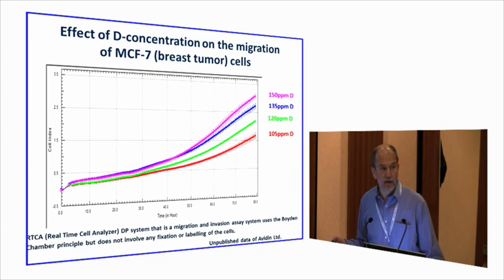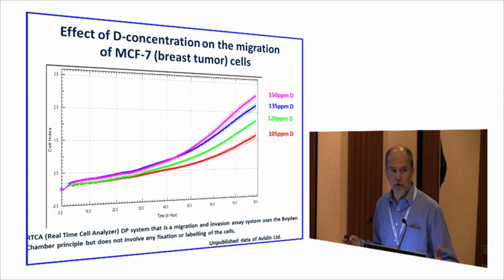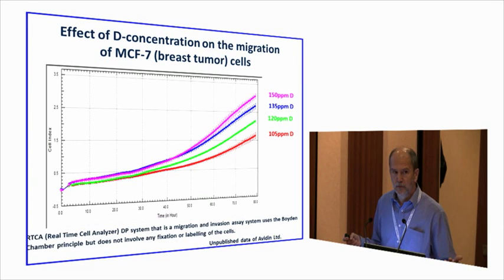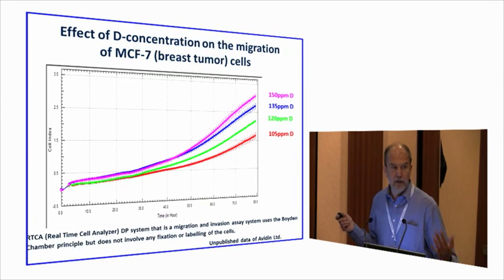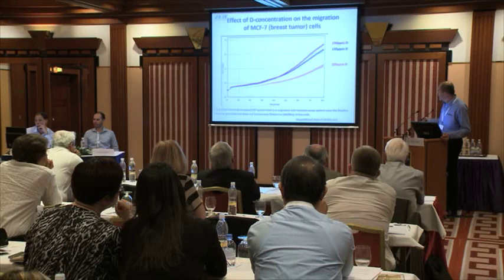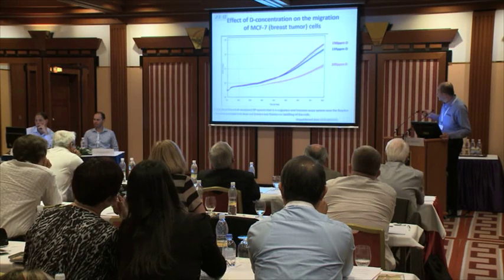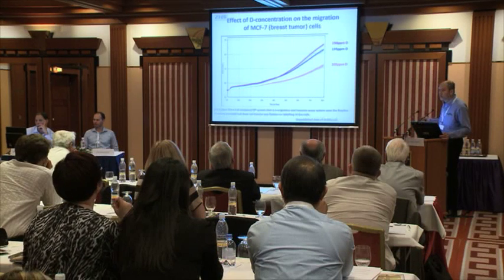Another critical point is metastasis. By the time a tumor patient is operated on and the primary tumor removed, millions of cells have already left the primary tumor — and later, metastases appear. In the first experiment, we checked whether we can modify cell migration by changing the deuterium concentration. There was a strong correlation: when we reduced the deuterium concentration, we could inhibit migration of breast cancer and melanoma cell lines.